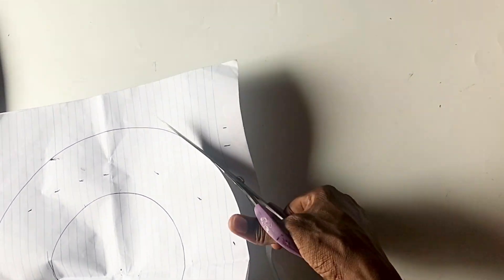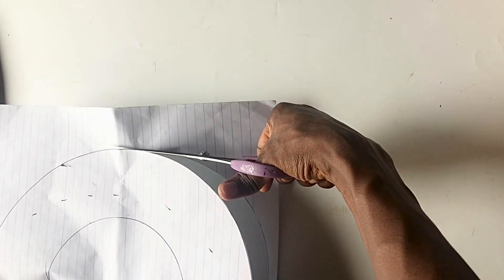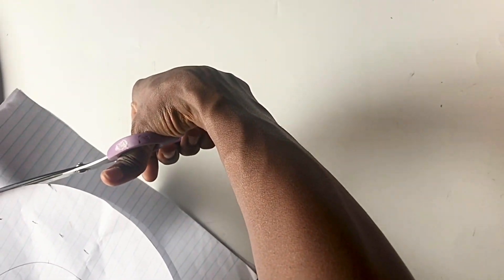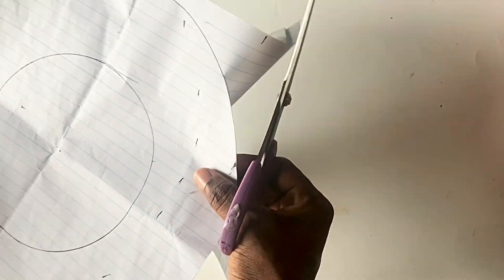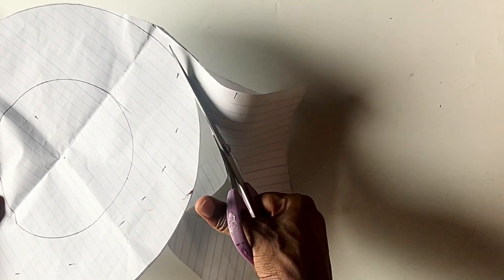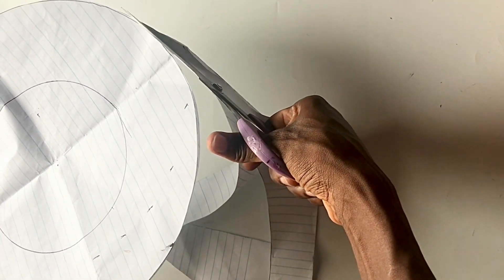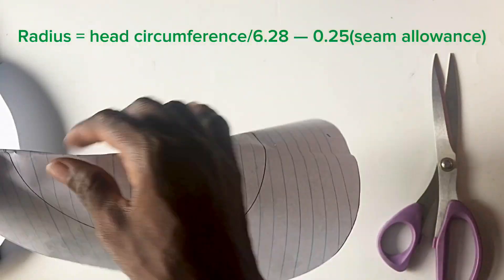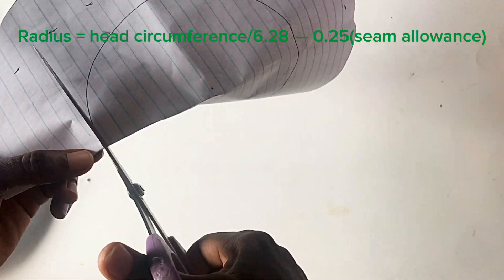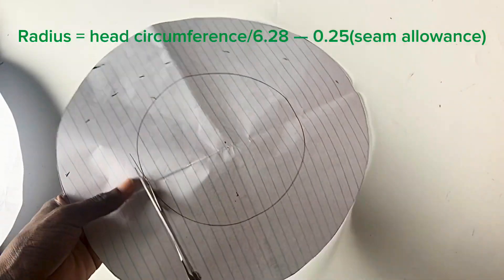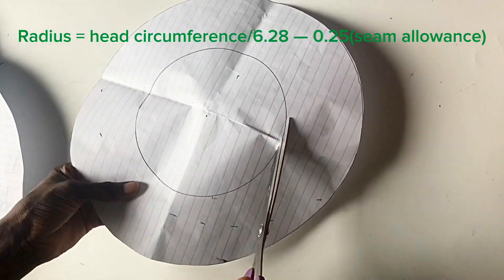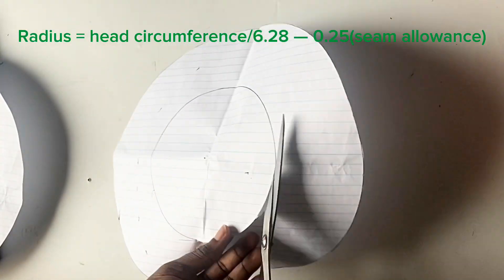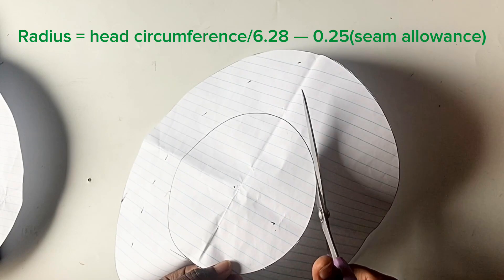The bigger circle has a radius of 6 inches, that's about 12 inches diameter, while the smaller circle has a radius of 3.25 inches. The radius for the smaller circle was achieved by measuring the circumference of my head and using the formula displayed in this video to obtain the radius. So I just used my compass to draw the circles.